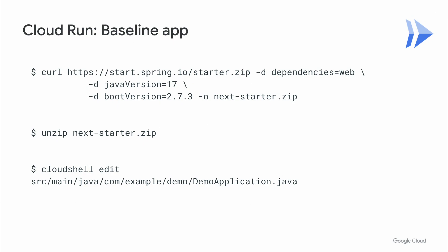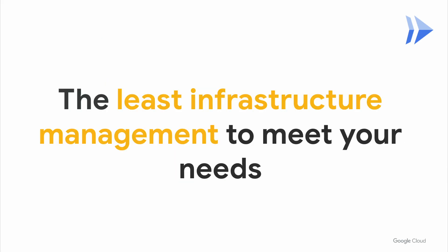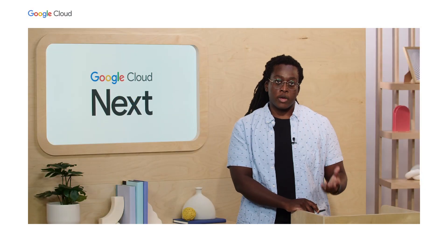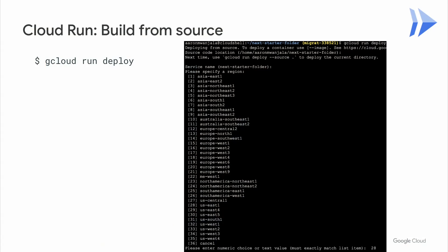Our sample app for today will be a straightforward Spring Boot web service. We'll start by curling it from start.spring.io, unzipping it, and opening it in the Cloud Shell Editor. Once we have our sample open, we'll add a sign of life to our app to help us decide if it's working properly after deployment. When considering where to run my code, I prefer to ask which solution involves the least infrastructure management to meet my needs. And if I know that I want an entire web service rather than just handling a few endpoints or events, then my first stop is generally Cloud Run. To get started, simply run gcloud run deploy from your source directory — that's all you need to access source deploys.